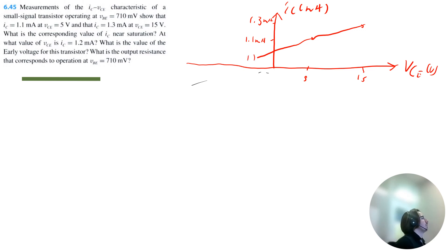So we get some kind of linear approximated curve like this. And if we stretch out really far, eventually we'll hit the early voltage, negative value. So the first question asks, what is the corresponding value of IC near saturation? What does this mean near saturation? That occurs when VCE is equal to 0.3 volts for a transistor.